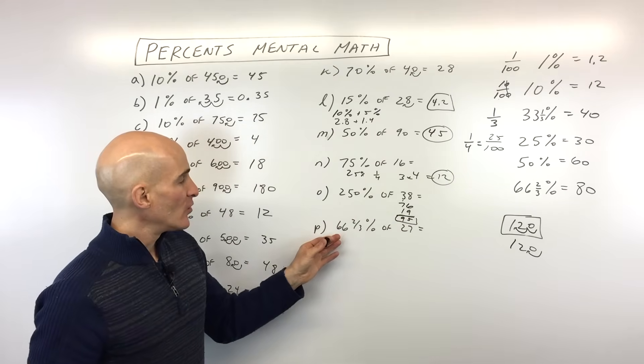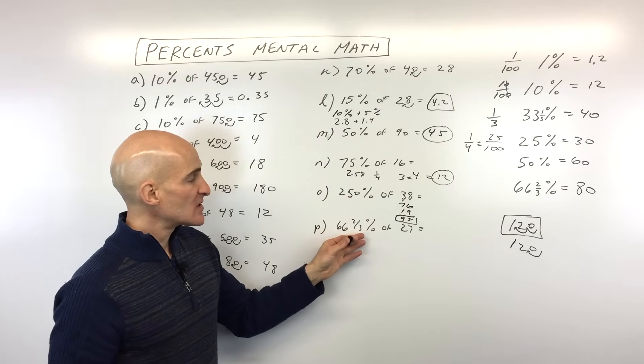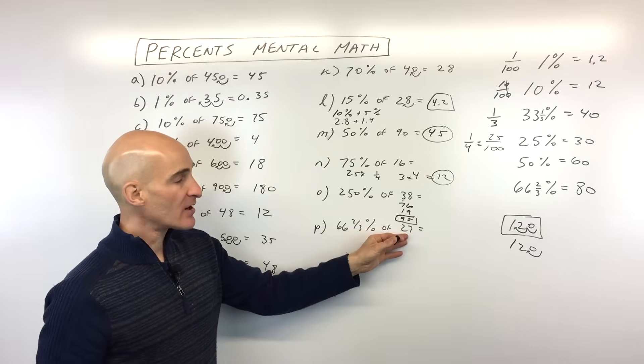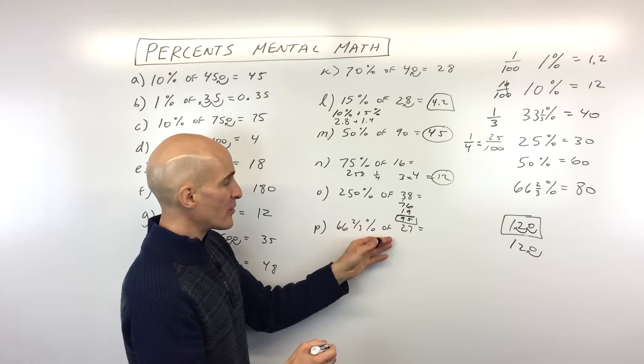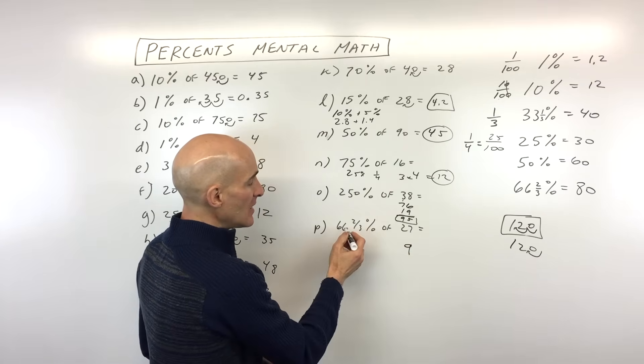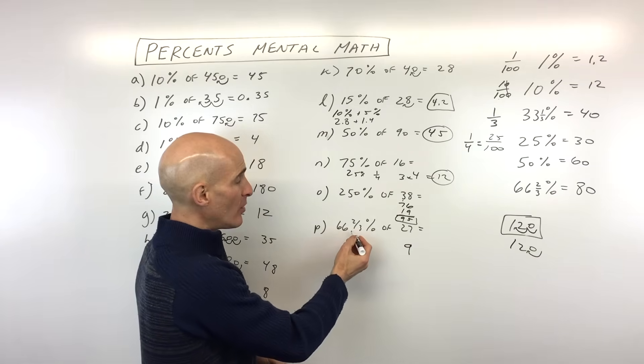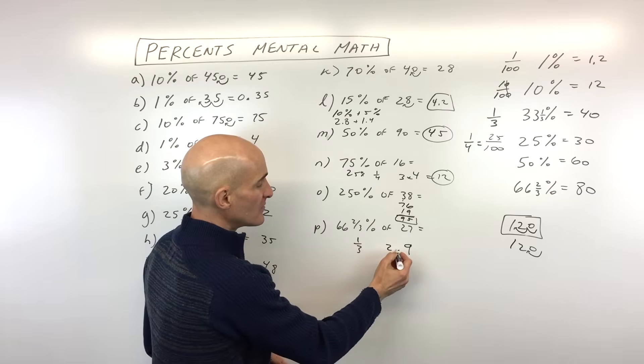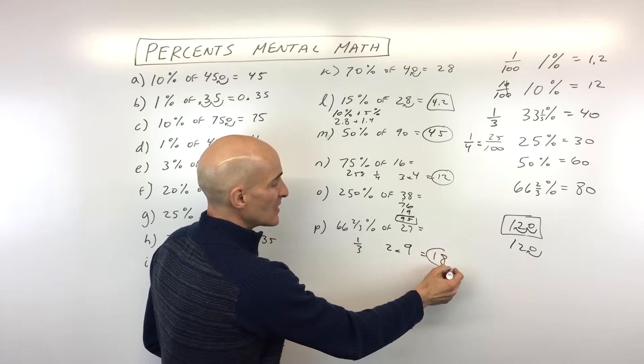Okay, so in the last one, 66 and two-thirds percent, we're talking about two-thirds. Let's talk about one-third. That's 33 and a third percent. One-third, when you divide by 3, that's one-third. So that's going to be 9. 66 and two-thirds is double 33 and a third. So if we multiply this by 2, you can see we're getting 18.